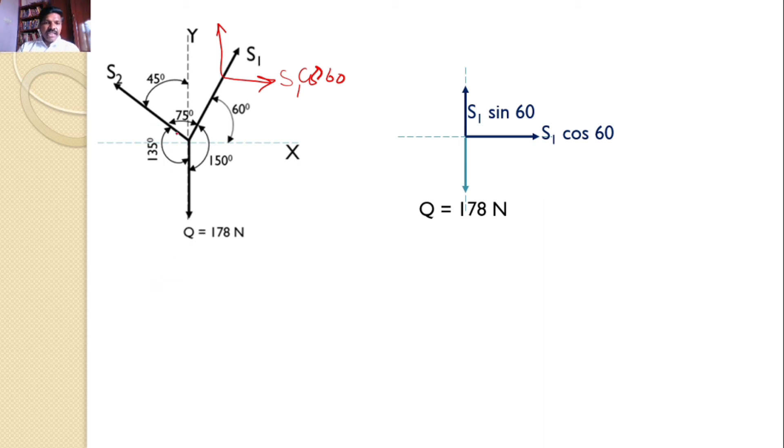Similarly, the S2 force makes an angle 45 degrees with the Y axis. So I can resolve this force along X and Y axis. The Y component is S2 cos 45 because S2 makes 45 degrees with the Y axis. Hence, Y component becomes cos. The horizontal component is S2 sin 45, vertical component is S2 cos 45.